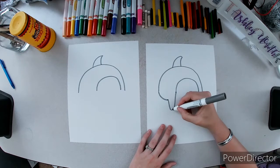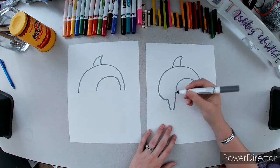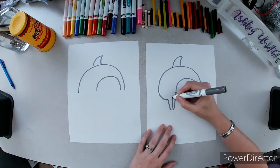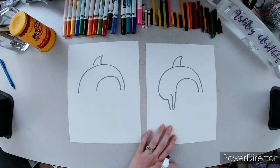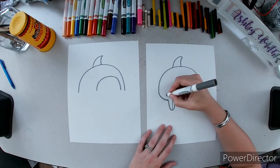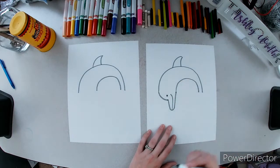Now from here I'm going to do a curve for the smile. And it's kind of a long skinny smile and it curves up way back there. And the eye is pretty close to the mouth, right there.